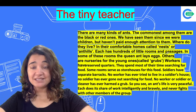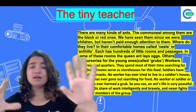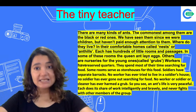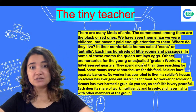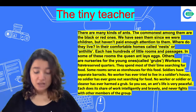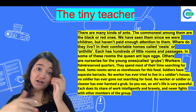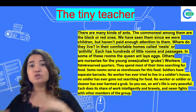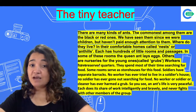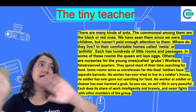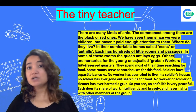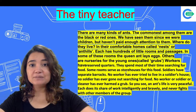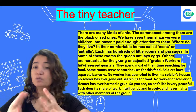Each ant hill has hundreds of little rooms and passages. In some of these rooms, the queen ant lays eggs. In other rooms, they have grown grubs. Workers have reserved quarters, and they spend most of their time searching for food. Some rooms serve as storehouses for food. Soldiers have separate barracks — no worker has ever tried to live in a soldier's barracks, and no soldier has ever gone out searching for food. The soldier's work is to protect, and the worker's work is to find food. No one interferes with someone else's work.